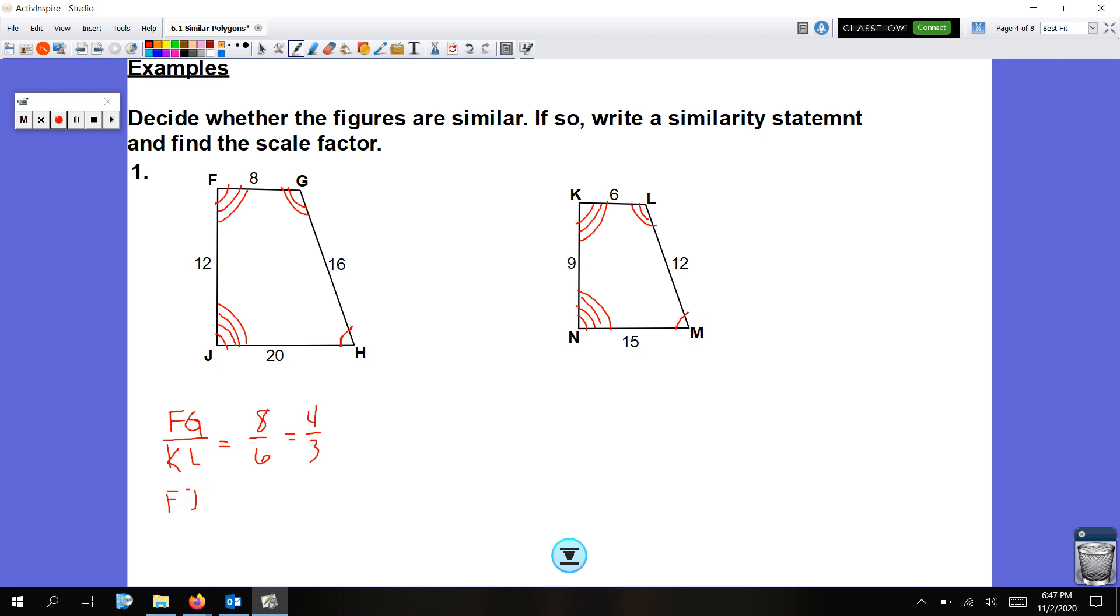Then we'll go FJ, that corresponds to KN. We plug in the numbers, we have 12 over 9, that reduces to 4 over 3. We'll just keep working our way around this figure, so next is JH, that corresponds to NM. That is 20 over 15, which is 4 over 3. We have a common factor of 5. And last but not least, GH corresponds to LM, 16 over 12. We have a common factor of 4, and it reduces to 4 over 3. Please be sure that you're reducing so that you're getting the proper scale factor. So all four sides of these figures have the same scale factor. The scale factor is in fact 4 over 3.